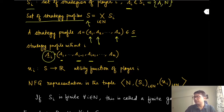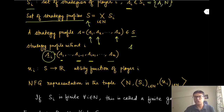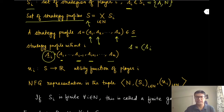So we are just removing agent i's strategy and looking at the strategy profile of all the other players, denoted by s_{-i}. This lets us write the whole strategy profile S in a much shorter notation as (s_i, s_{-i}) — the strategy of player i combined with the strategies of all other players — and we will use this notation very often in this course.